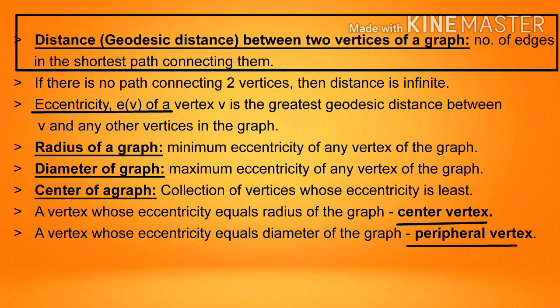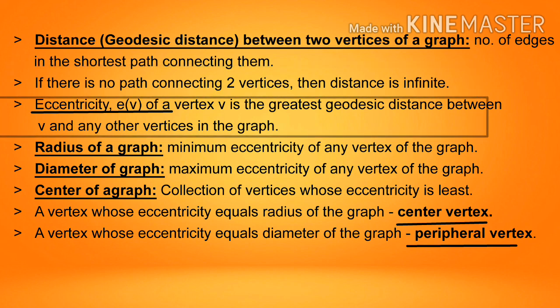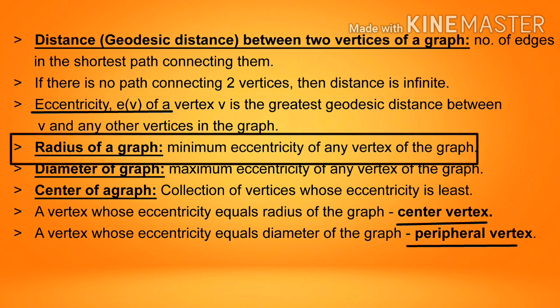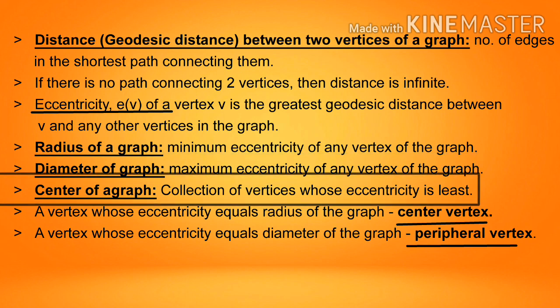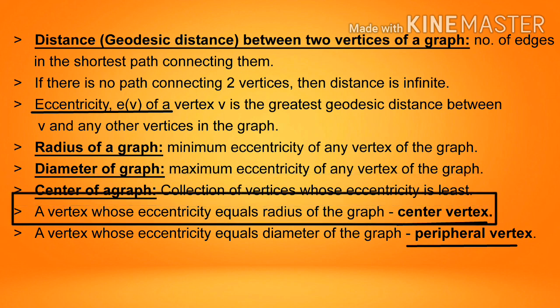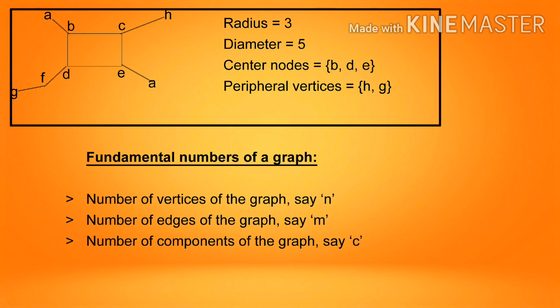Summary of graph distance definitions: Distance or geodesic distance between two vertices is the number of edges in the shortest path; if no path exists, distance is infinite. Eccentricity E(V) of vertex V is the greatest geodesic distance between V and any other vertex. Radius of a graph is the minimum eccentricity of any vertex. Diameter of a graph is the maximum eccentricity of any vertex. Center of a graph is the collection of vertices whose eccentricity is least — a vertex whose eccentricity equals the radius. Peripheral vertex: a vertex whose eccentricity equals the diameter. In a given example graph: radius = 3, diameter = 5, center nodes = {B,D,E}, peripheral vertices = {H,G}.